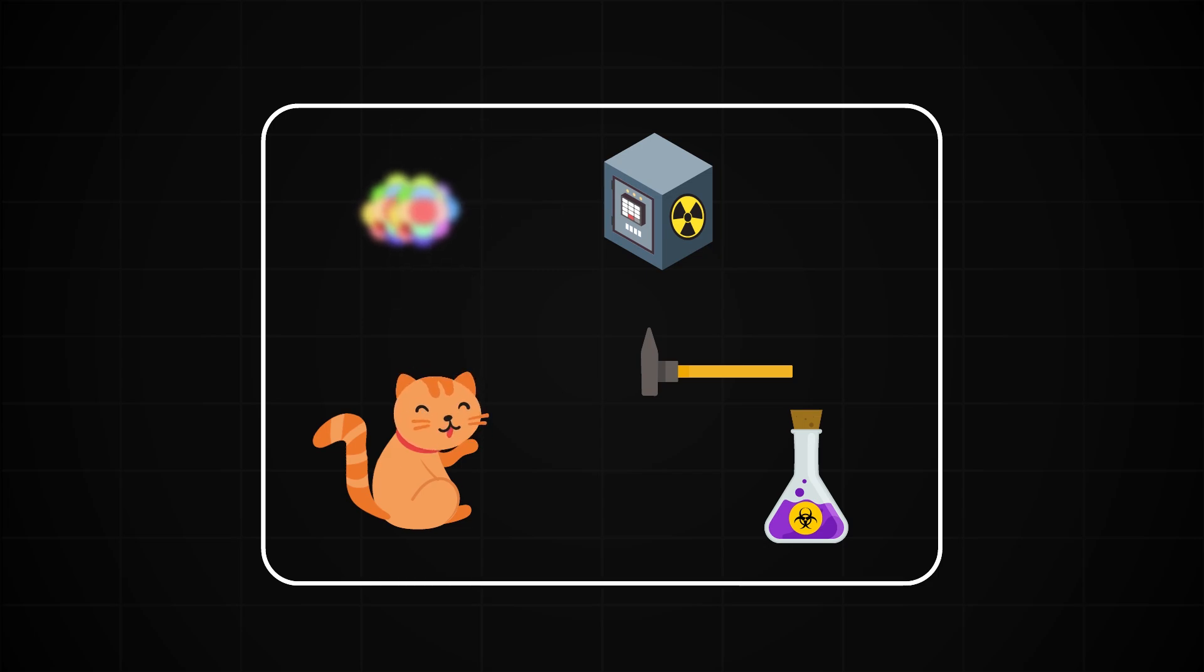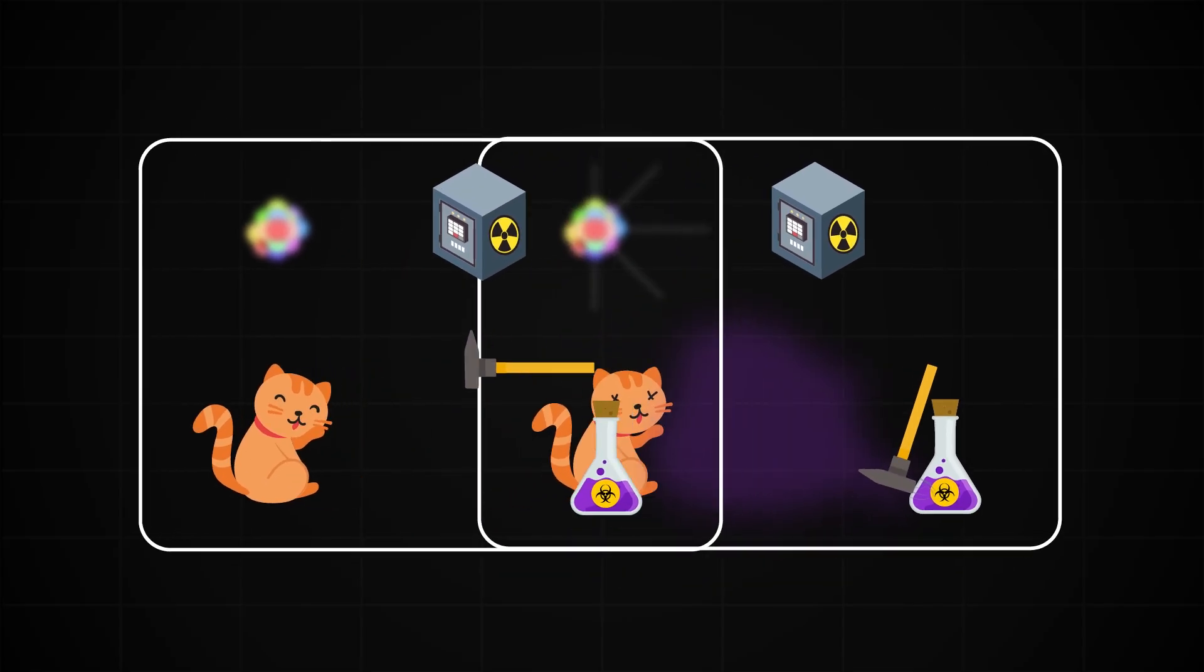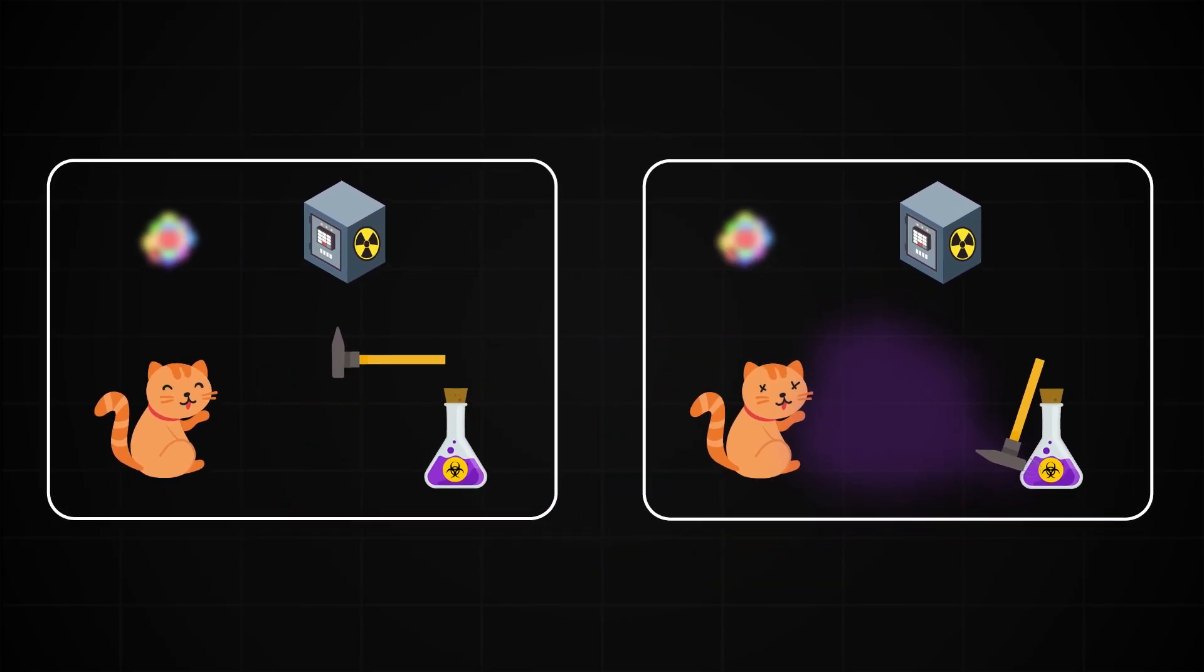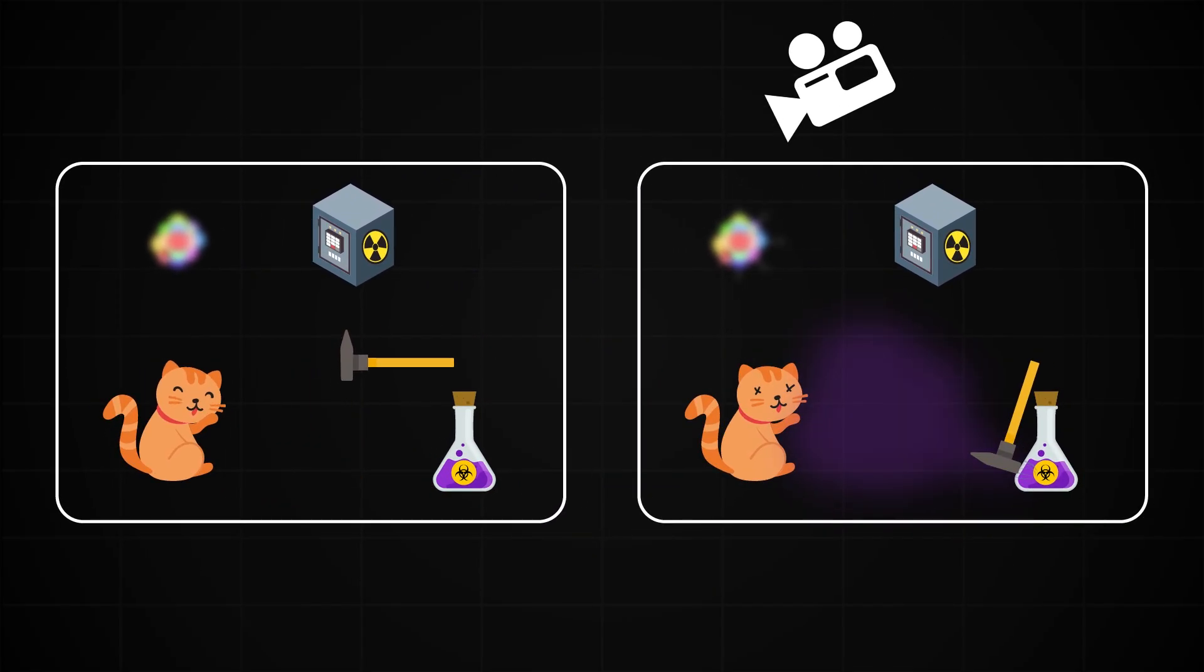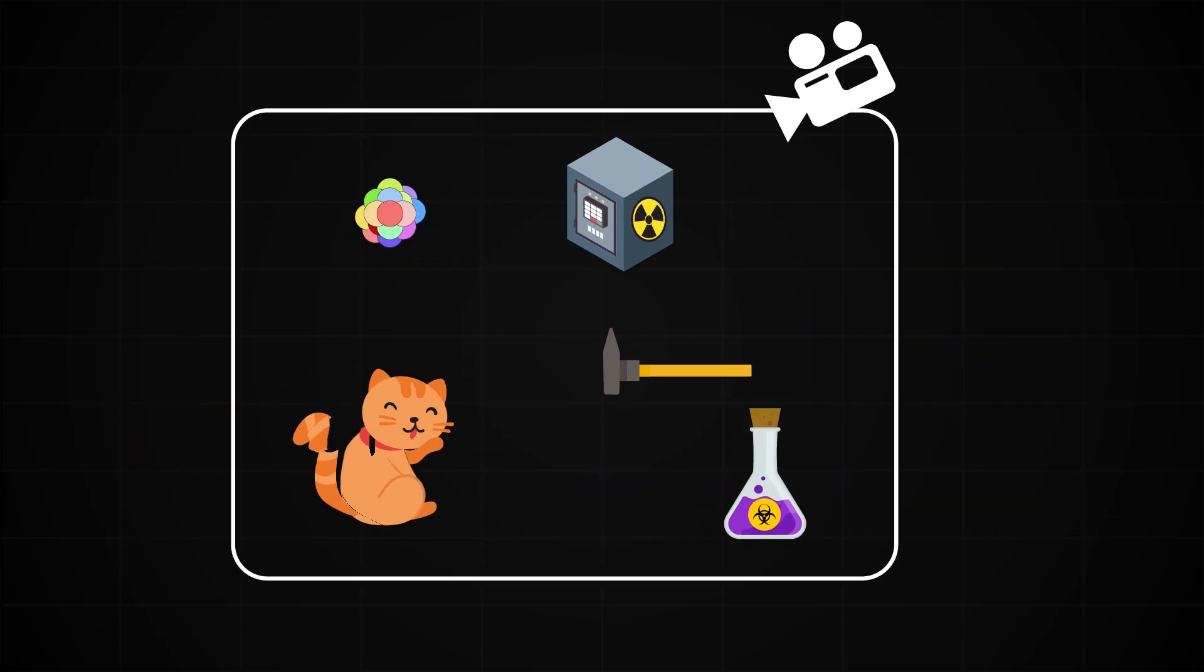So according to quantum mechanics, the cat isn't just either dead or alive. It's in a superposition of both at the same time. Only when we open the box and observe the system does the wave function collapse, forcing reality to pick one outcome.